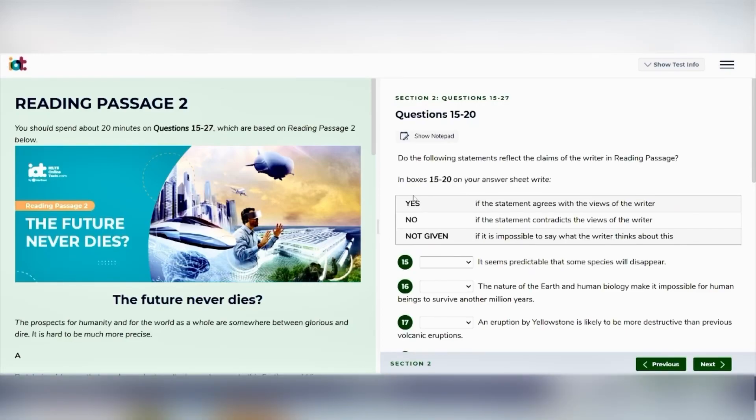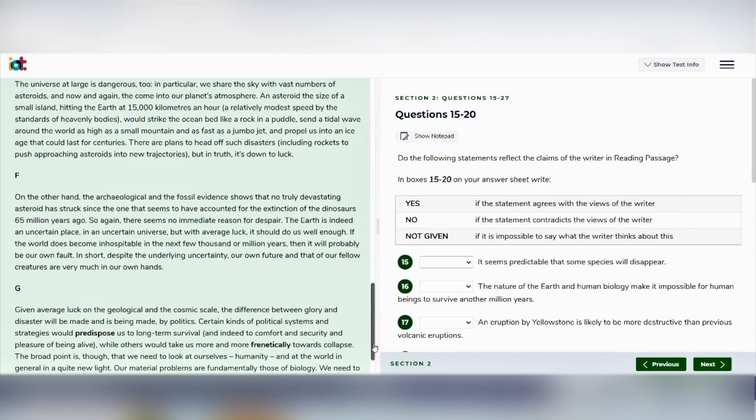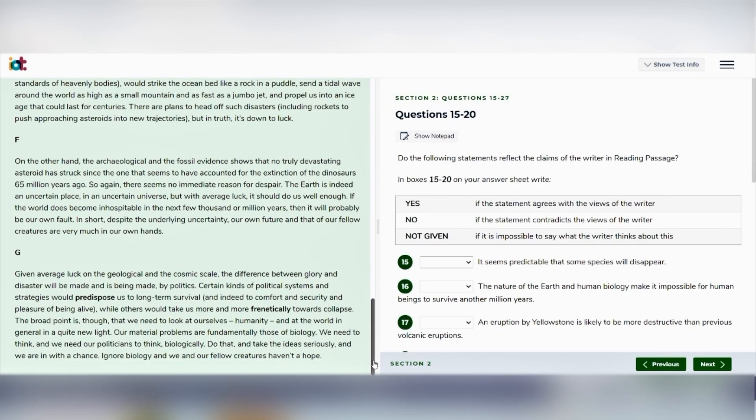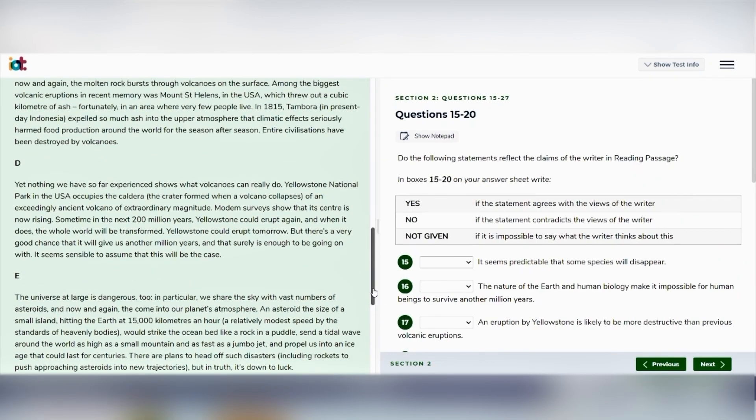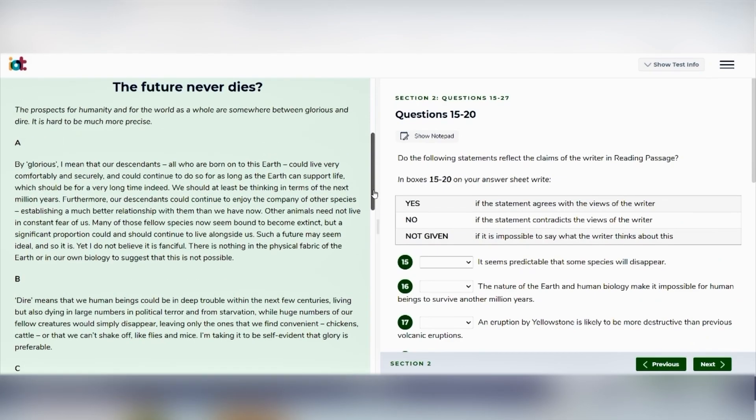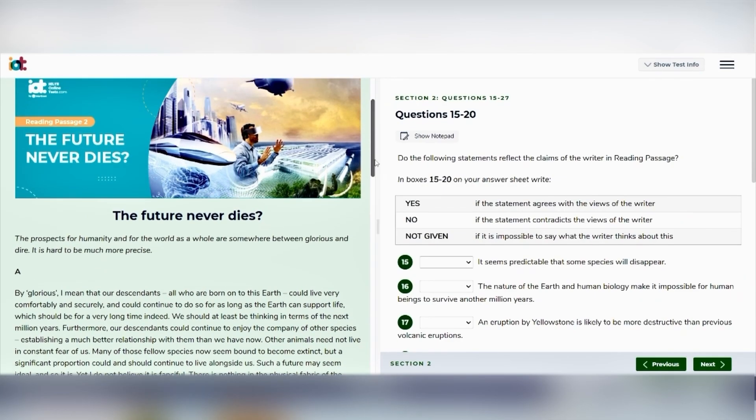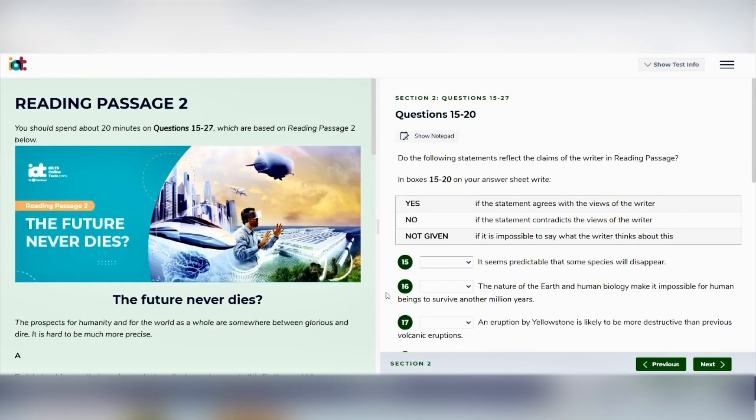In this video, you can practice IELTS yes or not given or true false not given questions with me. Before you start answering questions, quickly skim through the passage to get a general understanding of the topic. This will help you locate specific information more easily. If there are headings given in the passage, you can just read the headings and a few lines after them to know what information is found where. Because when you answer the questions, you'll have to read the passage again with more attention to details.